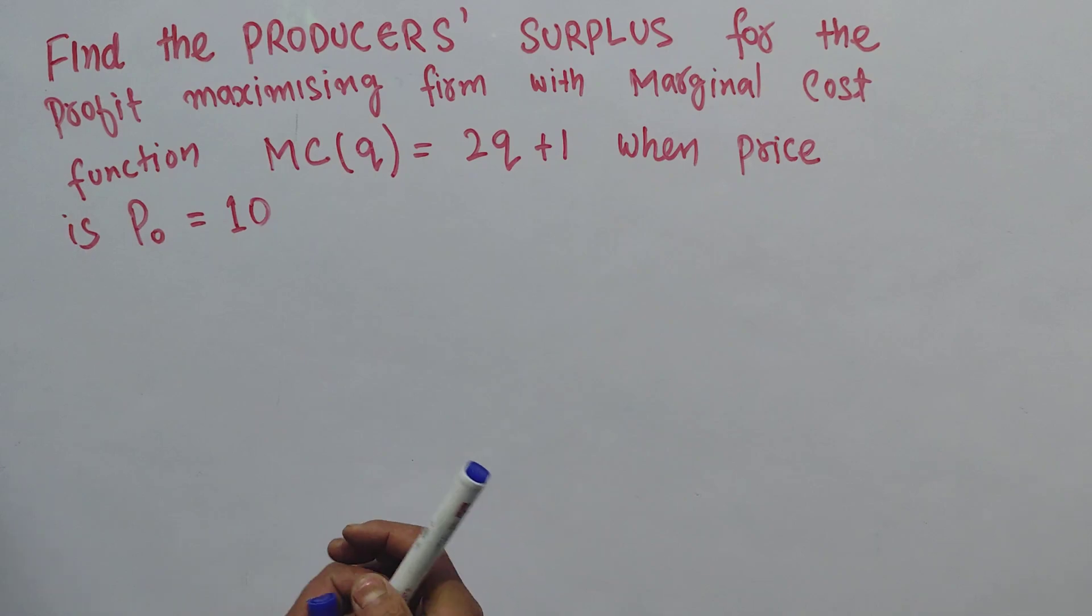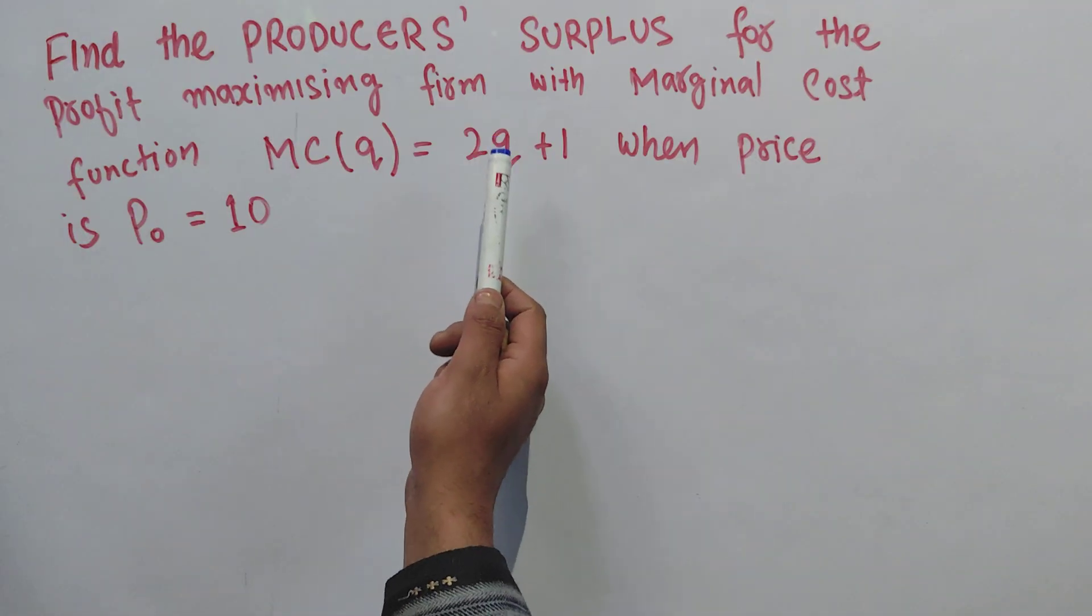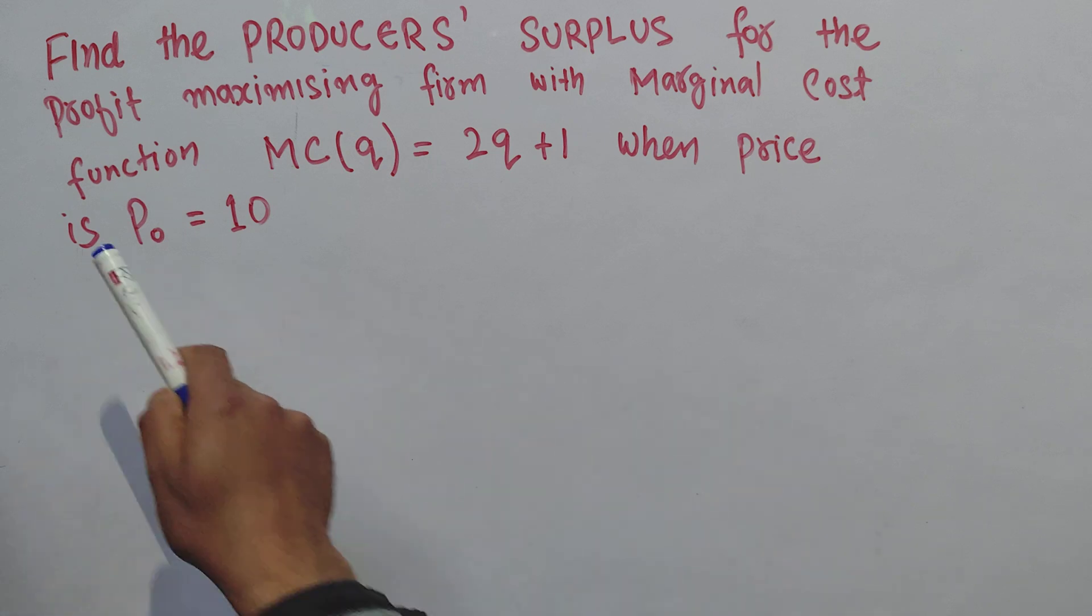Let us solve a question on producer surplus. The question is: find the producer surplus for the profit maximizing firm with marginal cost function MC = 2Q + 1, where Q denotes the output, when the price is $10.